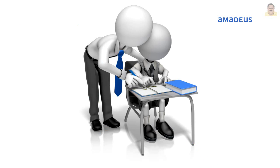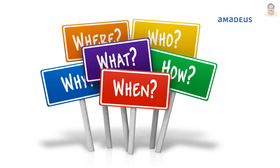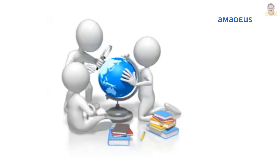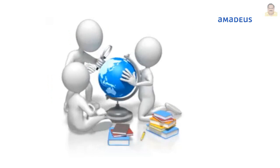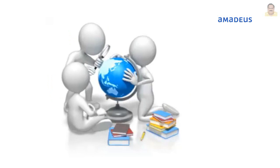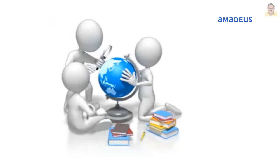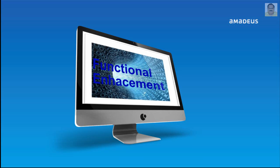Online Help contains a detailed description of all the entries that can be used in the Amadeus Central System. It explains how to use them, gives examples, and describes the responses these entries will generate. Online Help is intended to provide you with the most up-to-date support in the use of the Amadeus Central System. The information it contains is immediately updated as soon as a functional enhancement is made to the system.